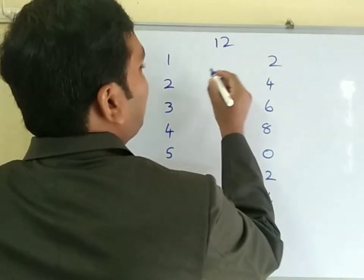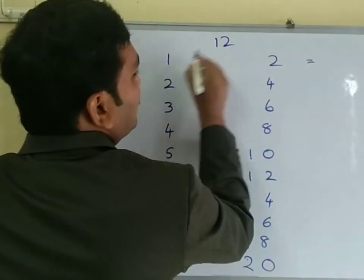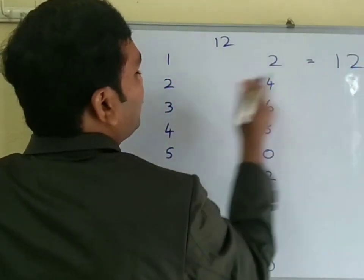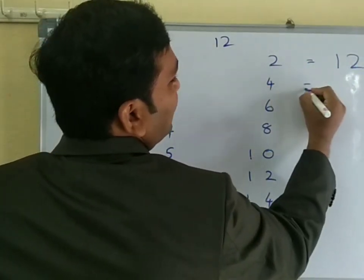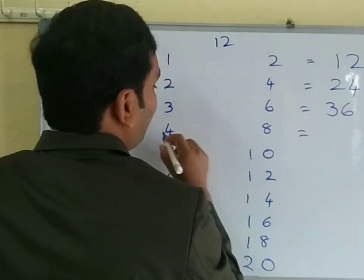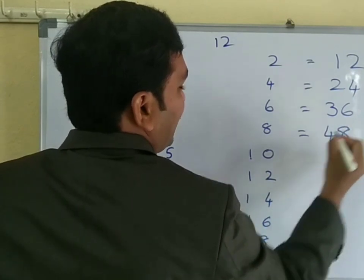That's all. See how I am writing: 12 1's are 12, so 1 2 equals 12, 2 4 equals 24, 3 6 equals 36, 4 8 equals 48.